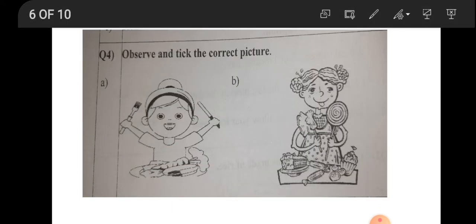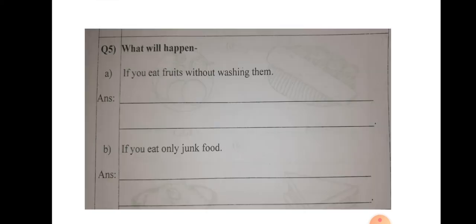Question 4. Observe and tick the correct picture. Look at the first one. This girl is eating a salad. And the other one, she is not looking healthy. And she is having lollipop and burger and chocolates and cakes and all. That is not good. That is not a food to have as solid food for lunch and all. So this is the correct one and this is absolutely wrong children. It is not a healthy food. Please, you also try to avoid children.